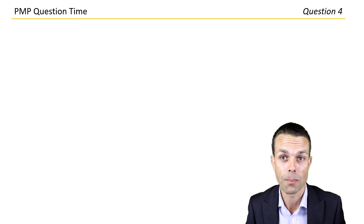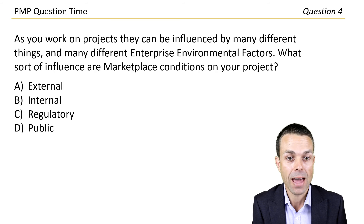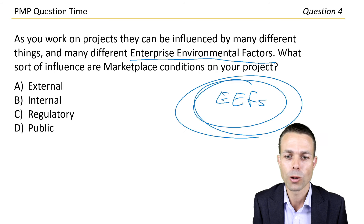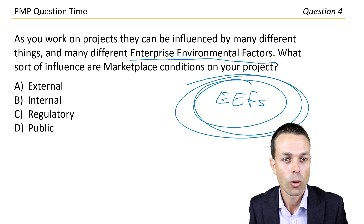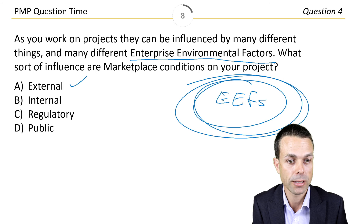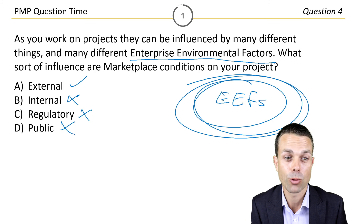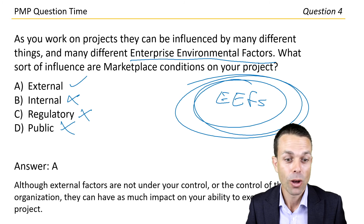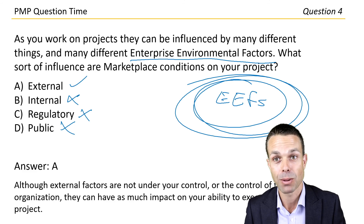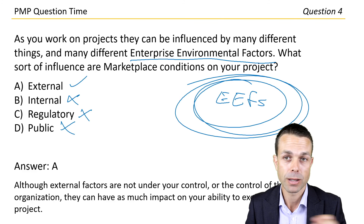Let's go to question four. As you work on projects, they can be influenced by many different enterprise environmental factors — EEFs — and you'll see these in almost every single PMBOK process. What sort of influence are marketplace conditions on your project? External — that sounds promising. They're not internal, not regulatory, and not really 'public.' Let's go with letter A. Although external factors are not under your control, they still impact our project, so we have to be aware of them. The marketplace is still impacting our project every single day, so we have to keep one eye on that while working on other things.